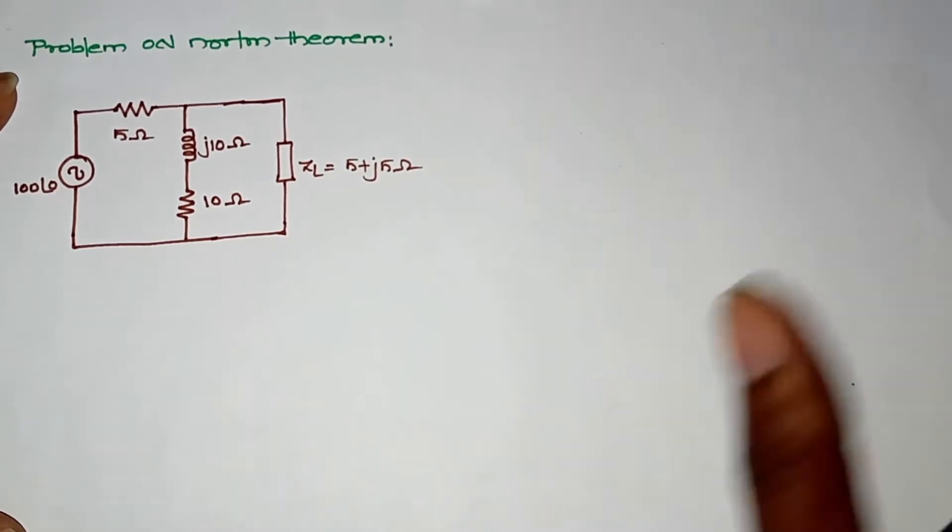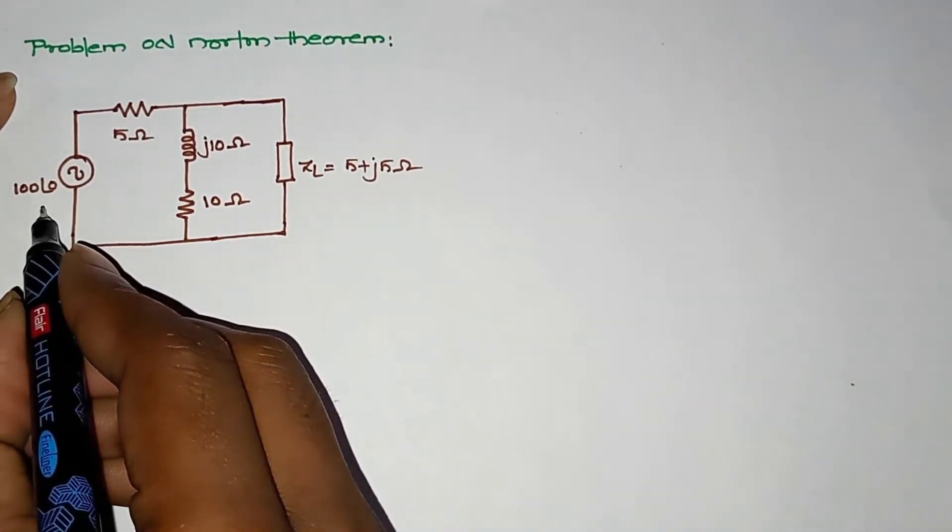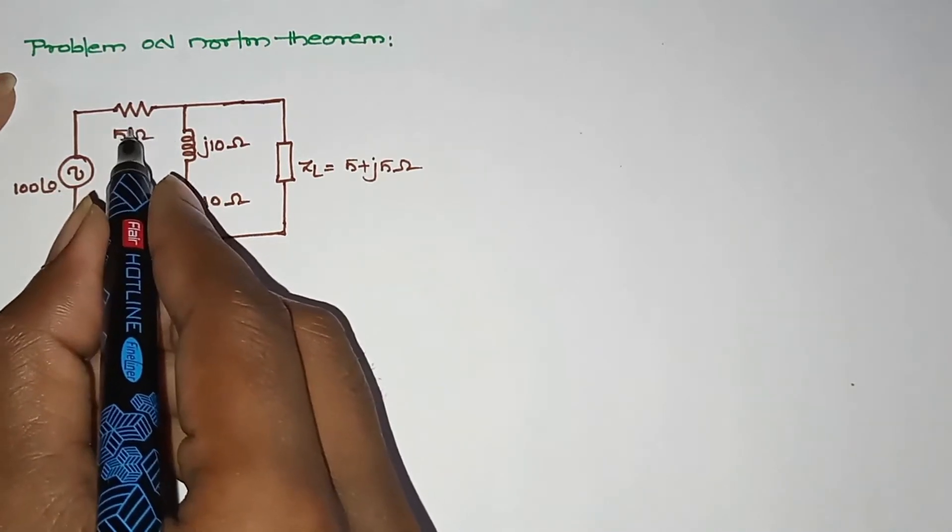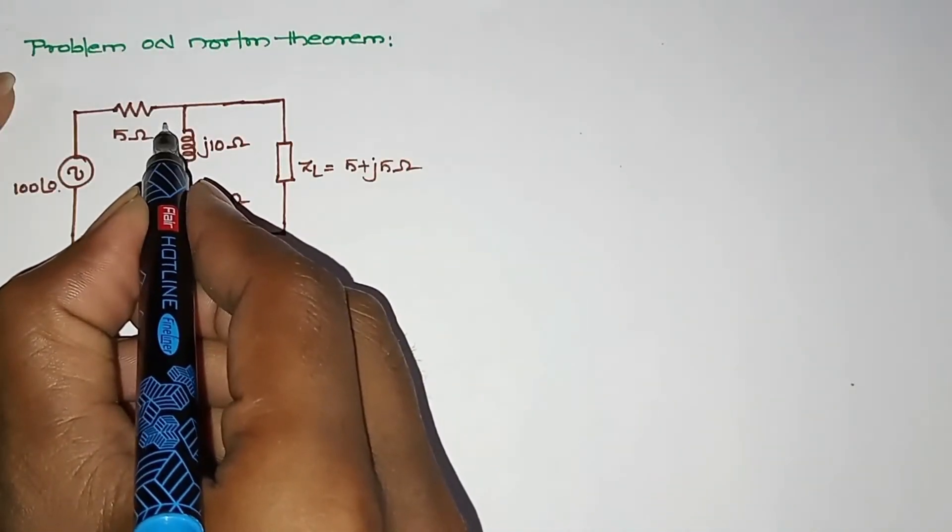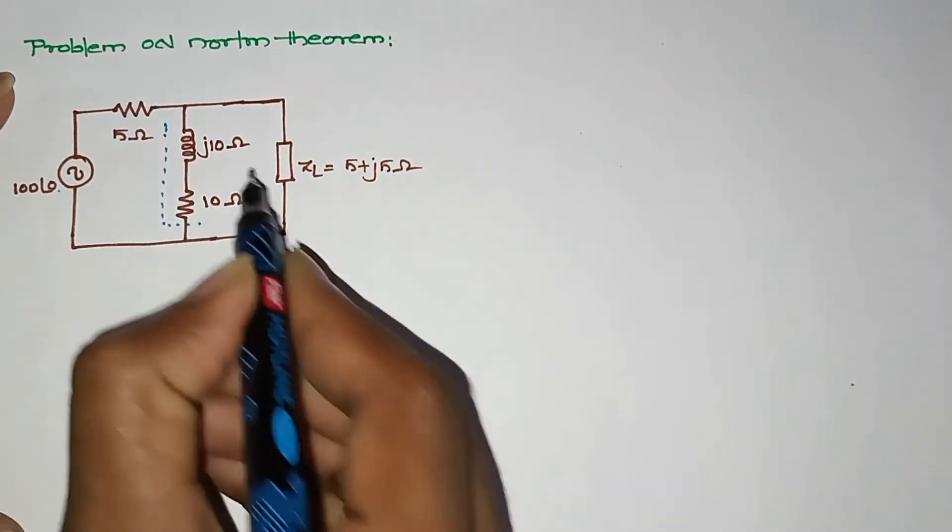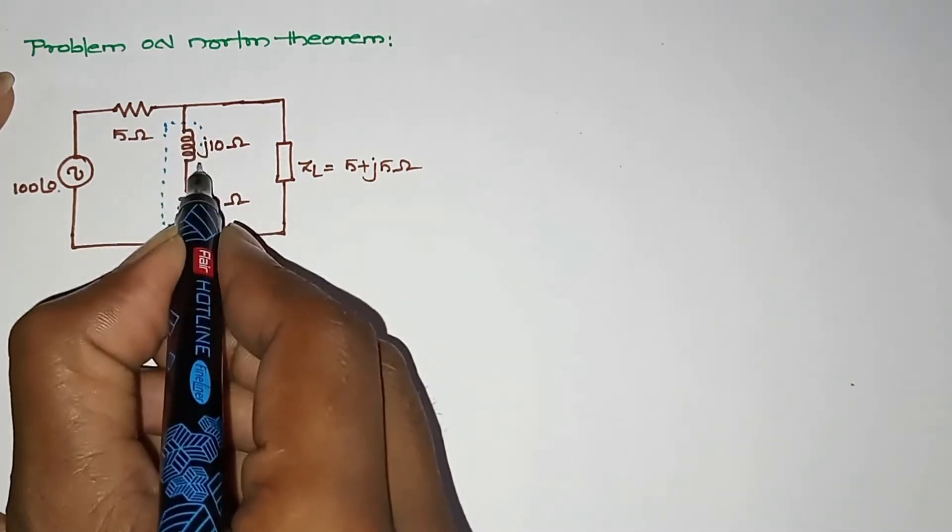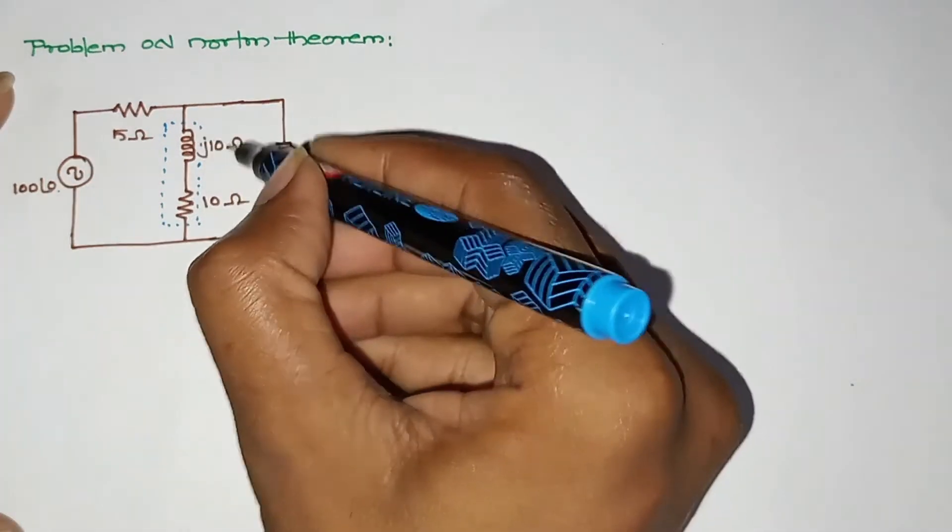Hello friends, I am going to show you a problem with AC circuits. The resistance value is 5 ohms. This is our impedance. The inductance value is j10 and the capacitance value is 10. This is our combination, 10 plus j10 ohms.